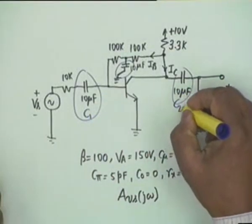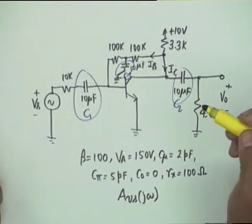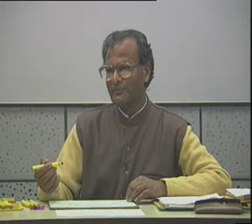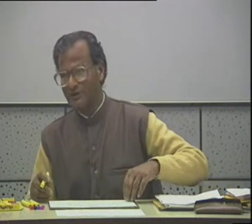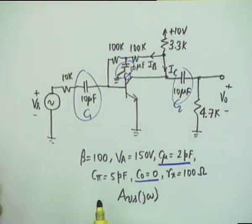Let us call these capacitors C1, C2, C3. We therefore have three low frequency critical frequencies — omega_L1, omega_L2, omega_L3 — corresponding to the three capacitances. There shall also be two high frequency critical points: one corresponding to C_pi plus C_m (the Miller capacitance), and the other due to C_mu plus C0 at the output. C0 is fortunately zero, therefore omega_H2 corresponding to C_mu plus C0 shall be much larger than omega_H1 due to C_pi plus C_m.